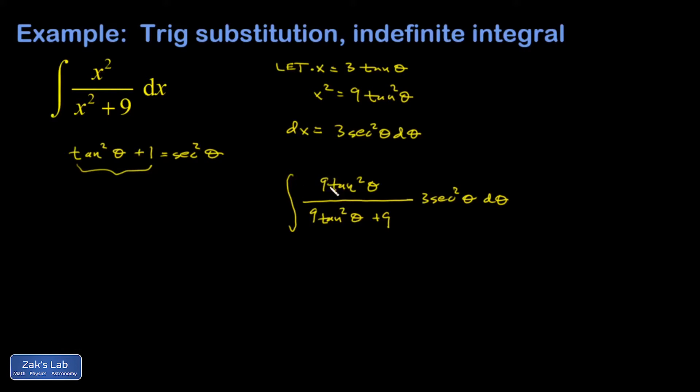I can factor a 9 out of the denominator and cancel it with the 9 in the numerator. I'll just take care of that right now. And I have a tangent squared theta. I'll pull the 3 out in front. Over tangent squared plus 1, which is secant squared.